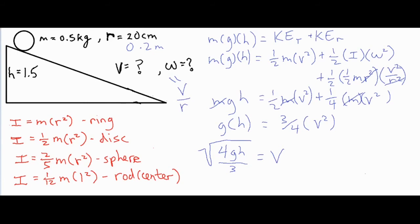Now taking a look at the ring, it's going to be very similar. Everything is going to look exactly the same except this substitution is going to be different. So for the ring, I equals mr² instead of ½mr². So if you take a look at this whole setup, this ½ would be gone. This would end up being ½.